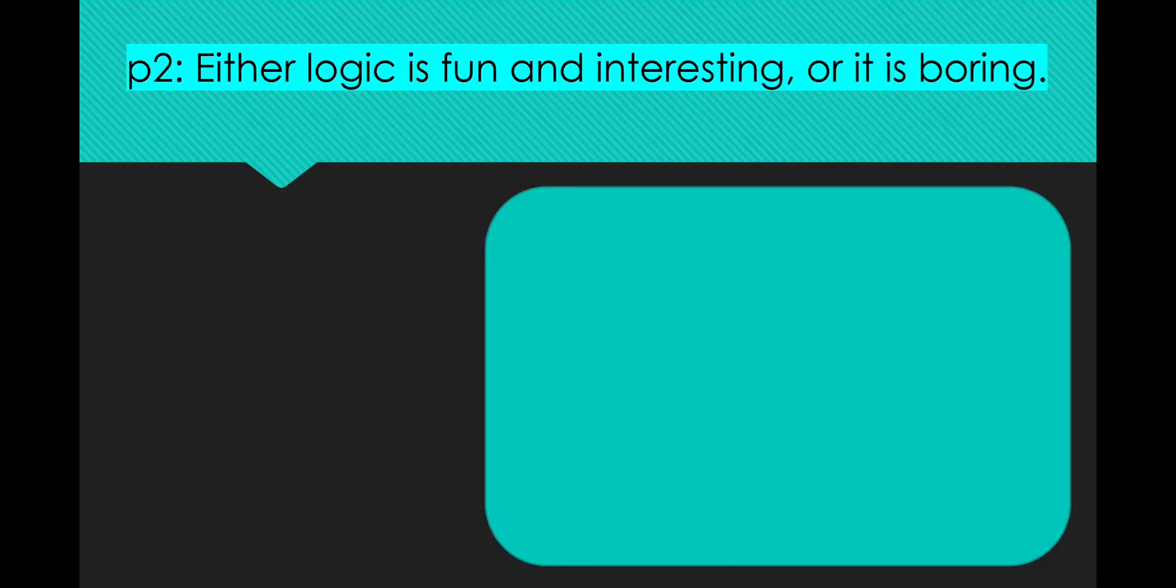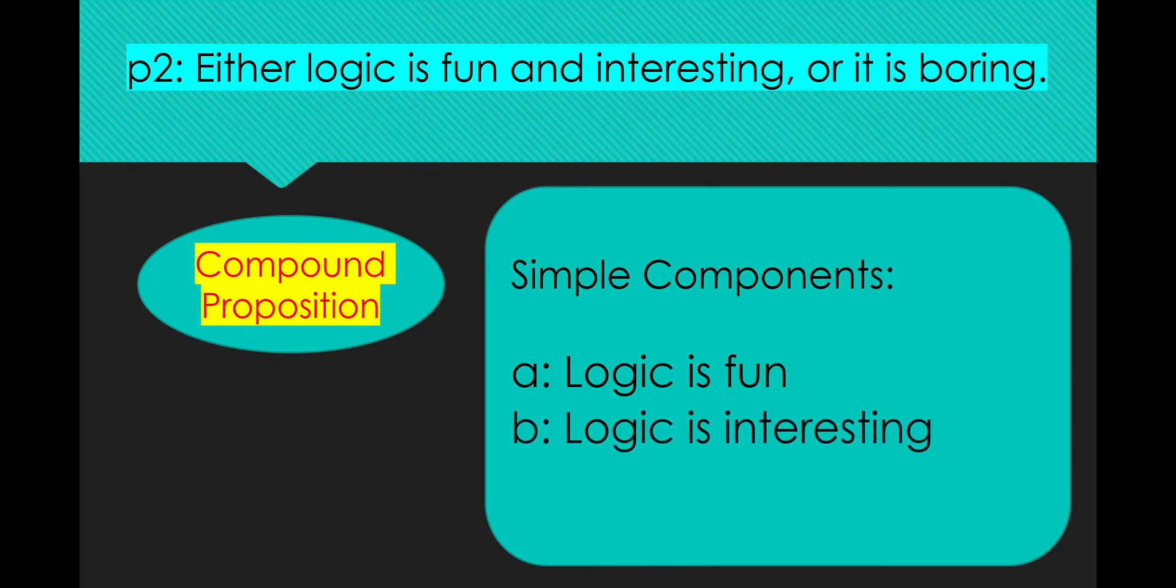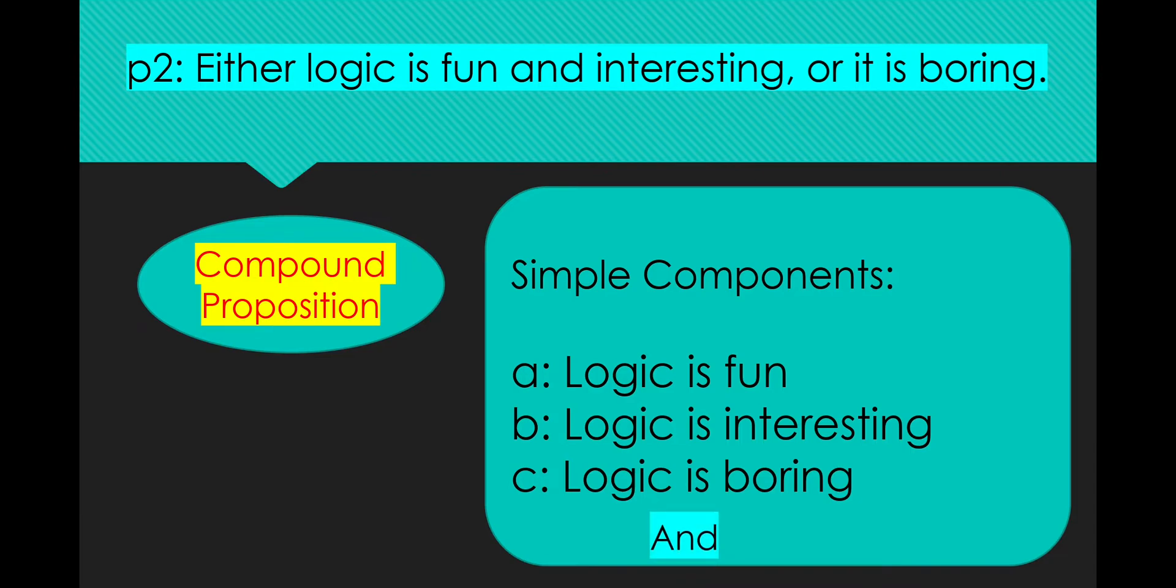Either logic is fun and interesting or it is boring. This is a compound proposition because of the words and and or. The words and and or connect more than two simple components. The first simple component, denoted as A, is logic is fun. The second simple component, denoted by B, is logic is interesting. And the third simple component is logic is boring. Therefore, the connectors used here are and and or.